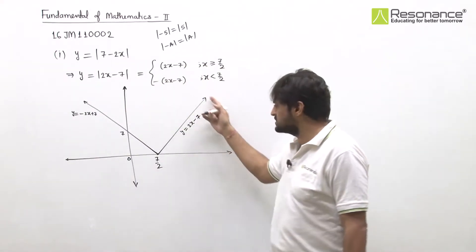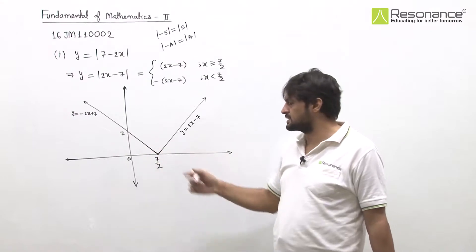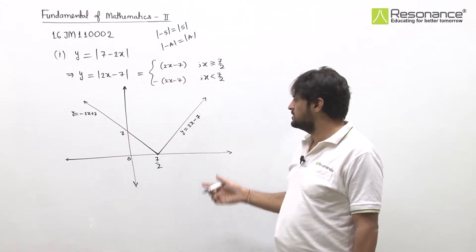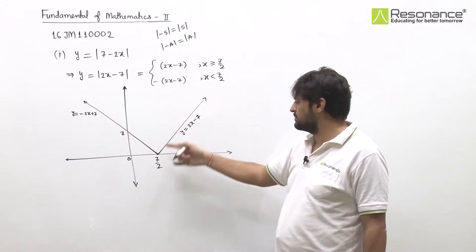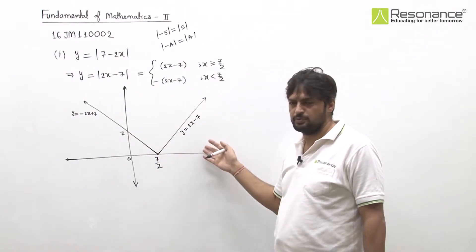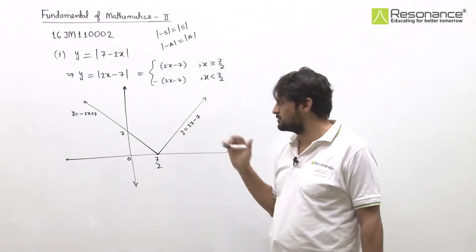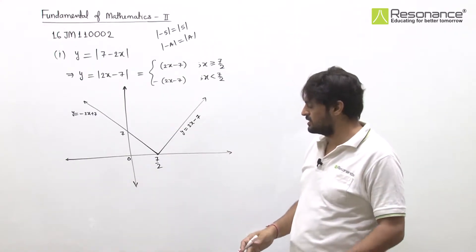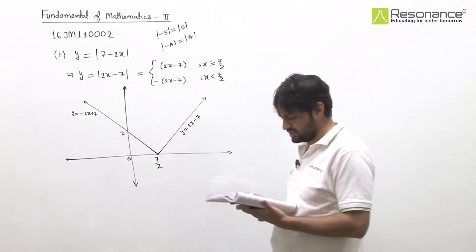So we can define it and draw from straight line graphs. We check values at 7/2, one point greater than 7/2, and one point less than 7/2 to draw the graph. This completes the first part.